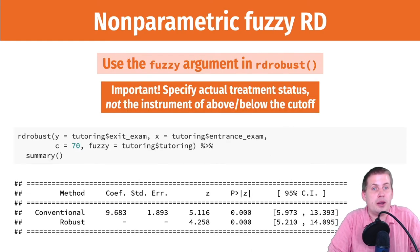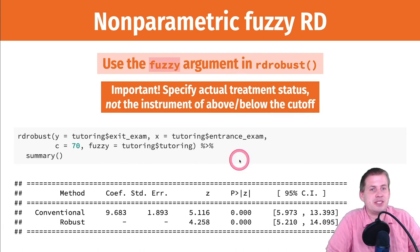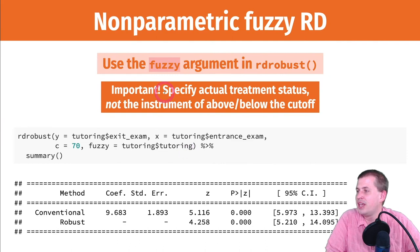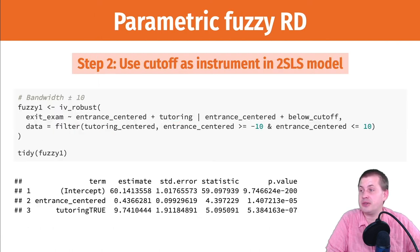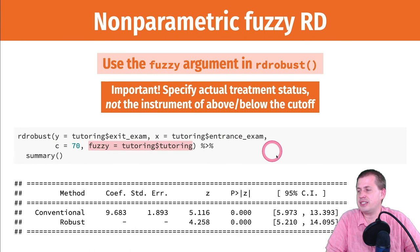You can also do this with rdrobust for nonparametric fuzzy regression discontinuity. To do that, you use an argument called fuzzy. The tricky part here, when you say fuzzy equals whatever, you do not use the instrument here. Even though technically you're using an instrumental variable like we did here below cutoff, you don't actually put that in rdrobust. It figures it out for you behind the scenes. So in fuzzy, what you actually feed it is treatment status, not the instrumental variable you make.